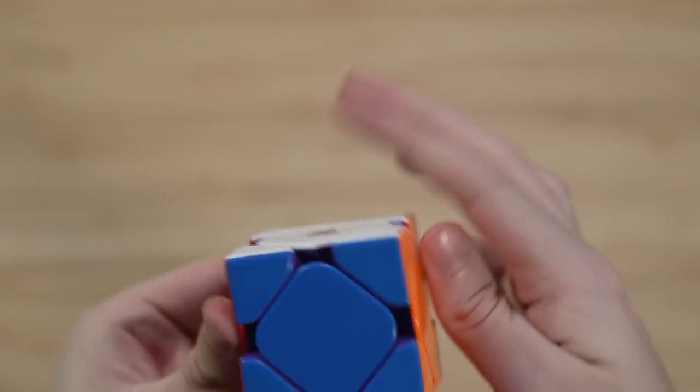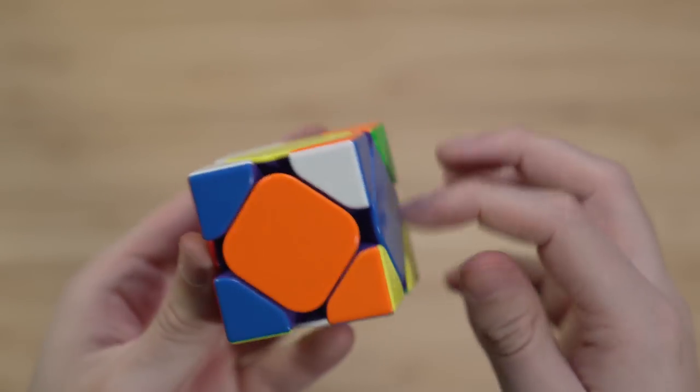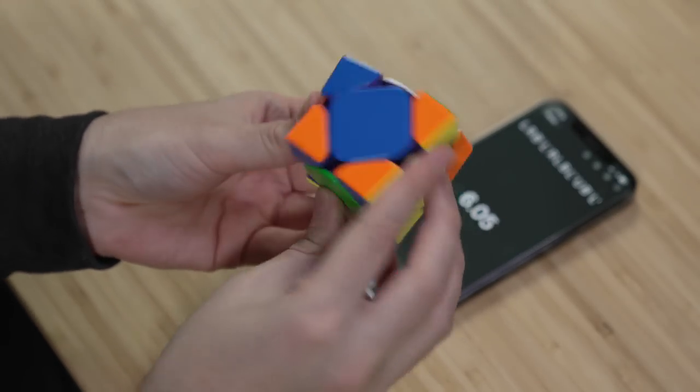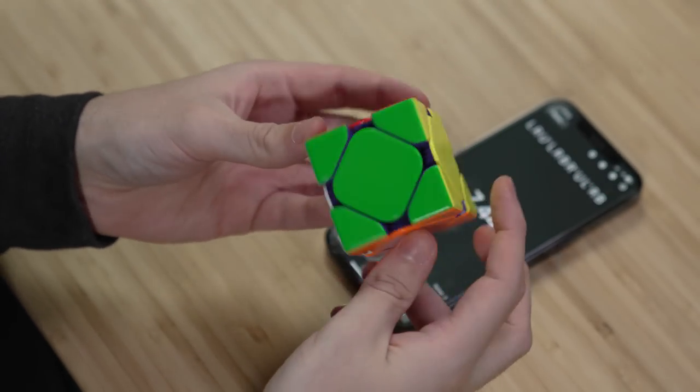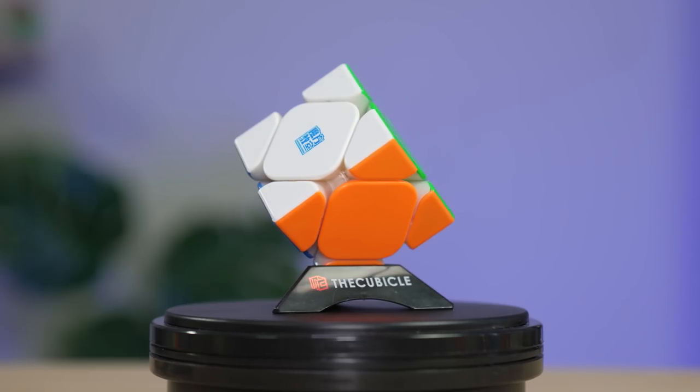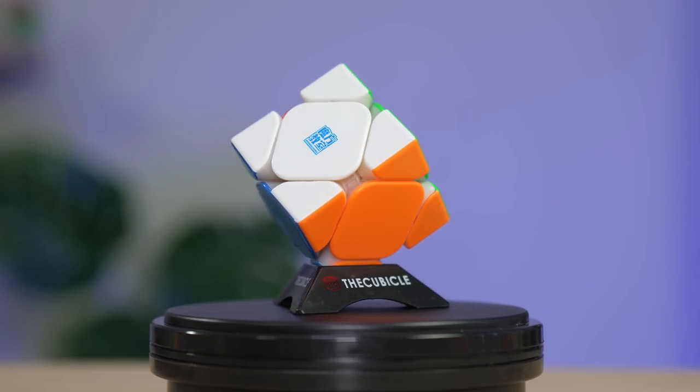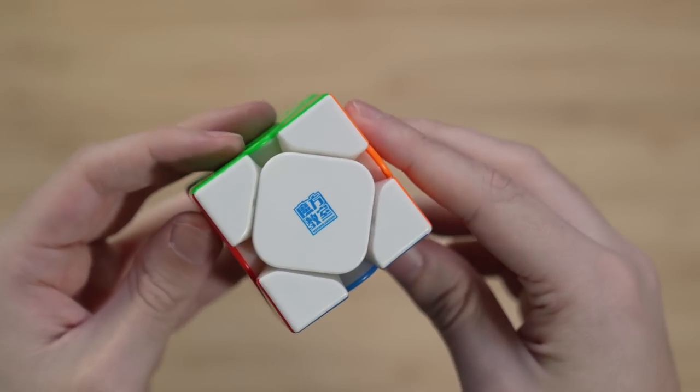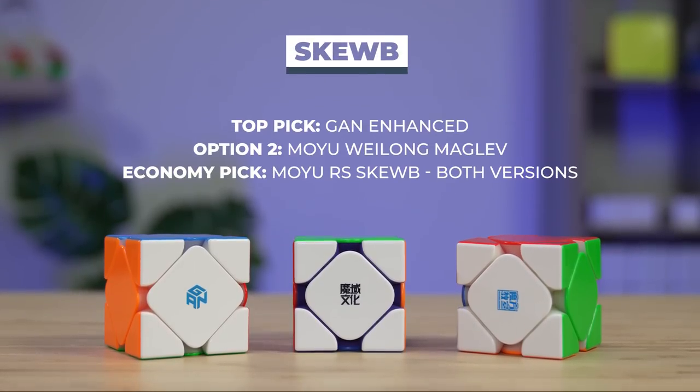so if you want to save a little bit of money, the Waylong is another good option. It only comes in a maglev version, so it's very fast. And it's also stable, but the stability comes at the expense of some of the Gan's fluidity. Just like for Pyraminx, if you're trying to save even more money, the RS line is a good option. Both versions make sense, they're both good puzzles, but if you want to save money, just get the standard. It's not that much different, and it's quite a bit cheaper.